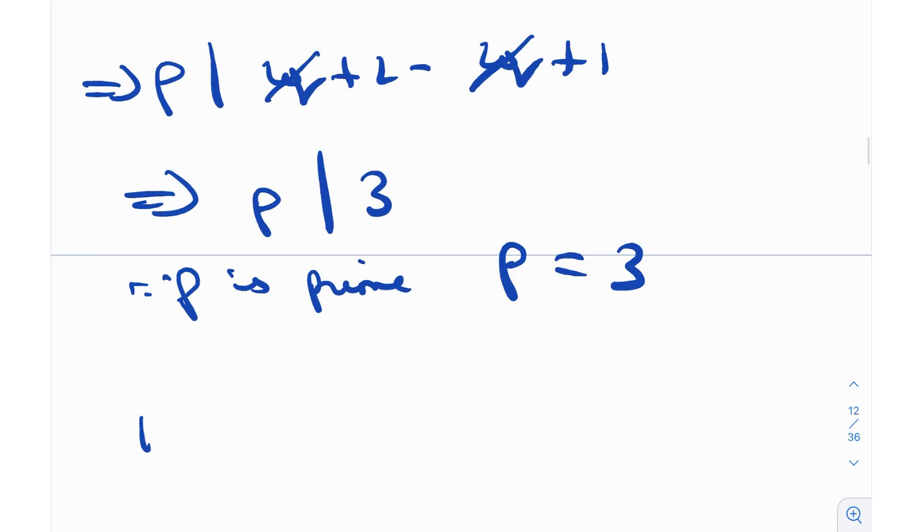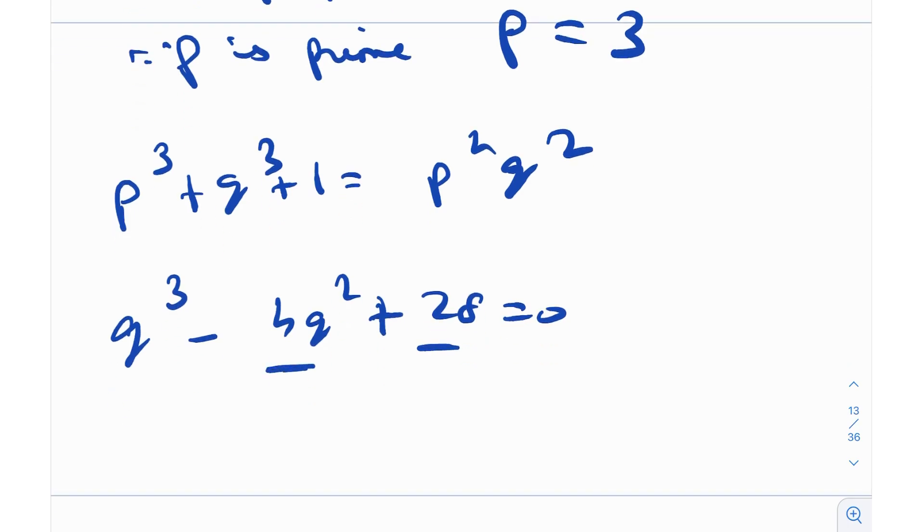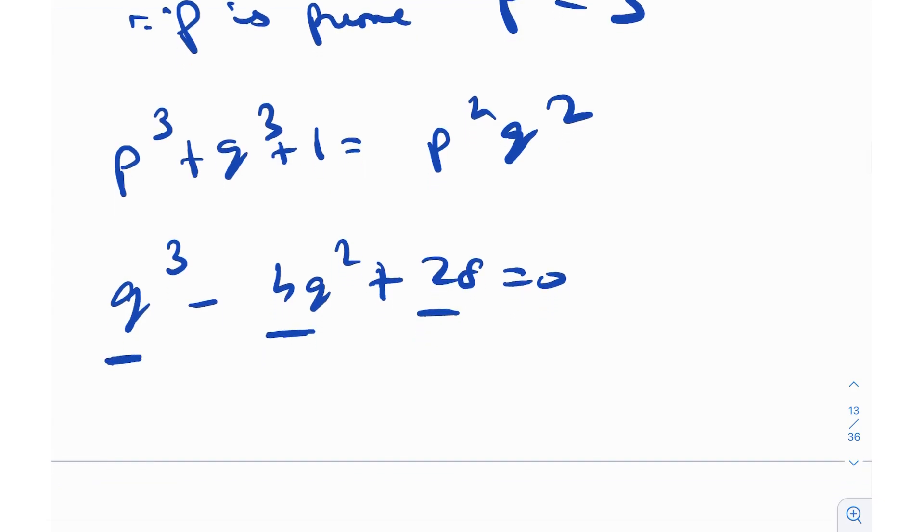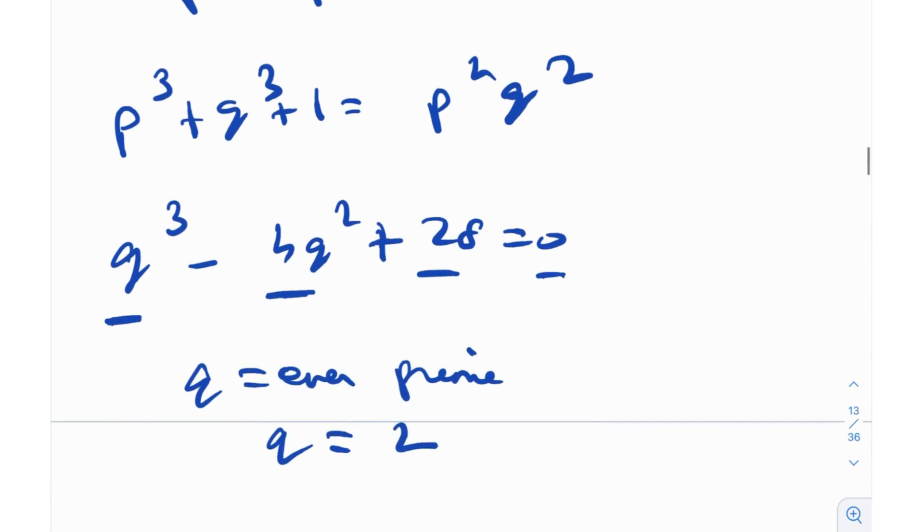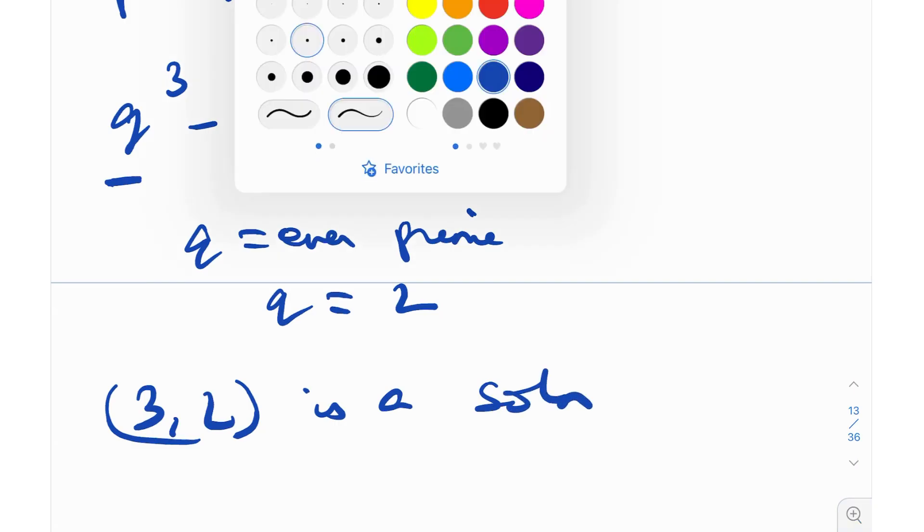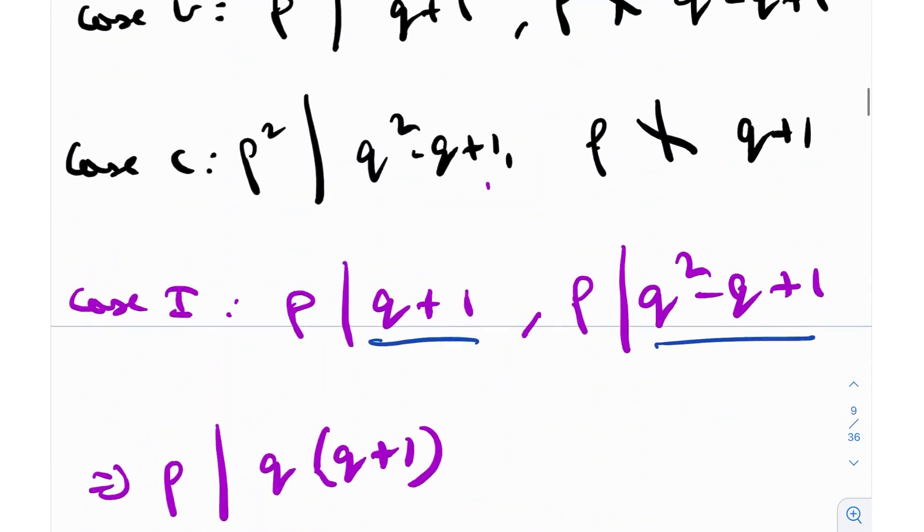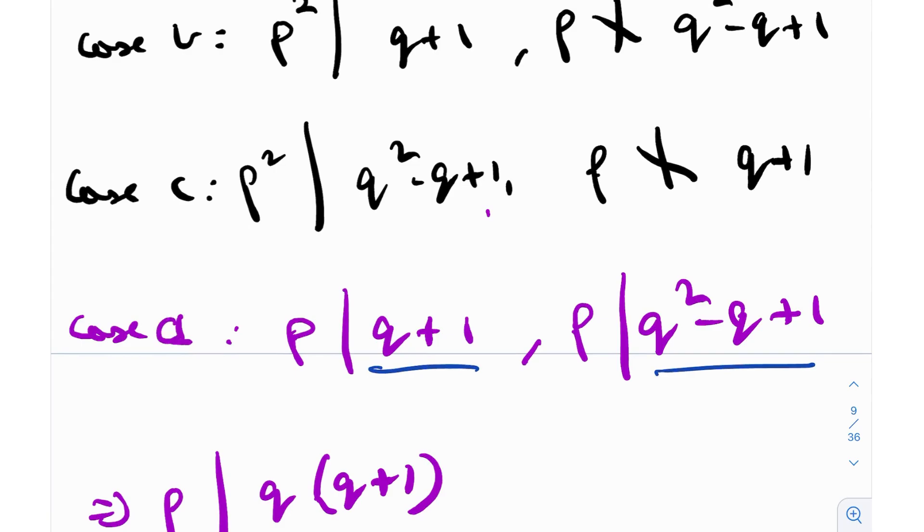When I plug this back into the original expression, I get q^3 - 4q^2 + 28 = 0. It is to be noted that q is a prime. So obviously this is 0 mod 2, this is 0 mod 2, both are even. So q is equal to the even prime, and obviously q equals 2. You can actually see that q equals 2 does satisfy. So 3, 2 is a solution. And this is obviously when we were working for case A.